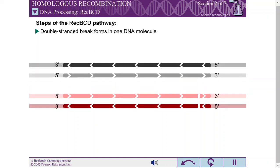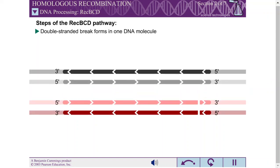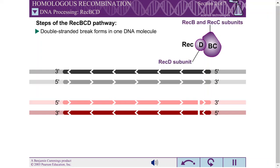In the double-strand break repair model of homologous recombination, the DNA is then processed to generate a gap in the DNA with a three-prime single-stranded overhang or tail. In E. coli, the REC-BCD enzyme processes blunt breaks in DNA molecules to generate such tails.